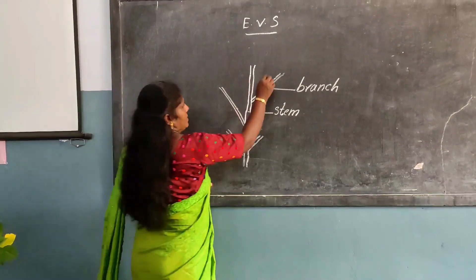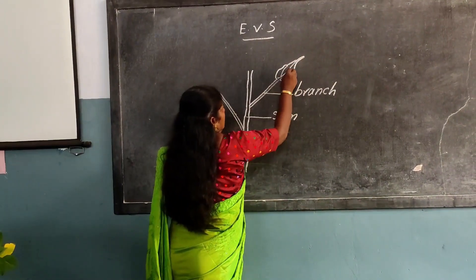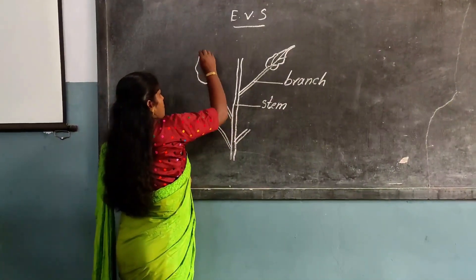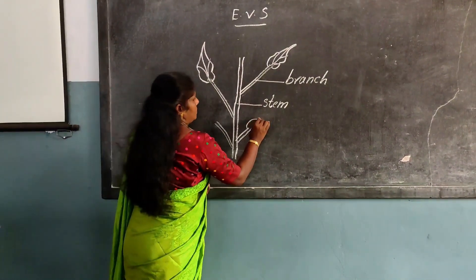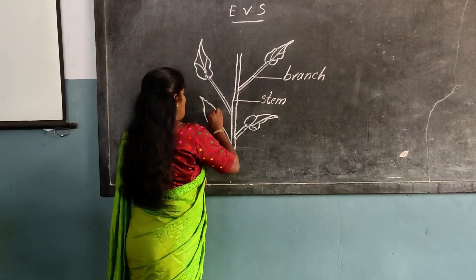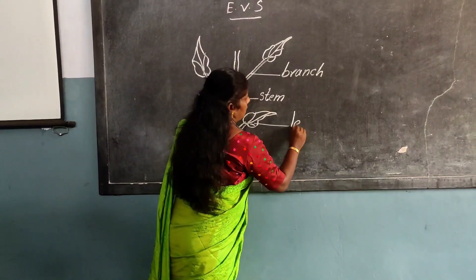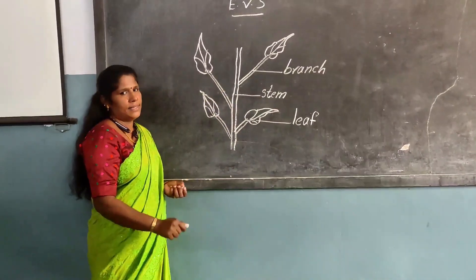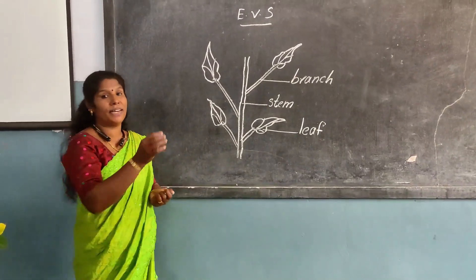Leave. Leave. Leave. What is this? This is a leave. Leave. The next part is the flower. Flower is a part of the plant.